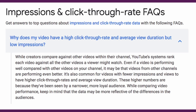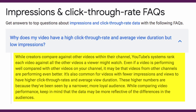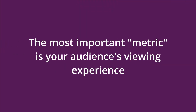Here's what YouTube has to say about why a video might have a high click-through rate and average view duration but low impressions. YouTube says that while creators compare other videos within their channel, YouTube systems rank each video against all the other videos that a viewer might watch. So even if a video is performing well compared with other videos, it may be that videos from other channels are just performing better. It's also common for videos with fewer impressions and views to have higher click-through rates and average view duration — this is because they are being seen by a narrower, more loyal audience. So while comparing video performance, keep in mind that the data may be more reflective of differences in audience.